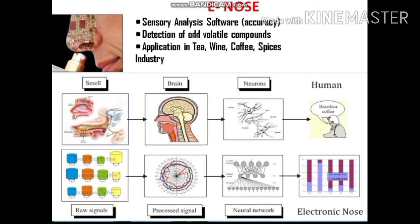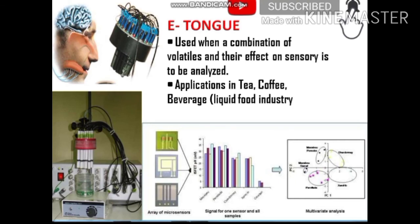The electronic impulses allow us to identify what type of food compound or smell is present. Humans can make mistakes in testing volatile compounds, but machines do not. The next innovation is the e-tongue, a combination of e-nose and a tongue-like taste analysis system. Since about 30% of human taste comes from volatile compounds smelled by the nose, the e-tongue is used when a combination of volatiles and their sensory effects need to be analyzed. It is applied in tea and coffee beverages.